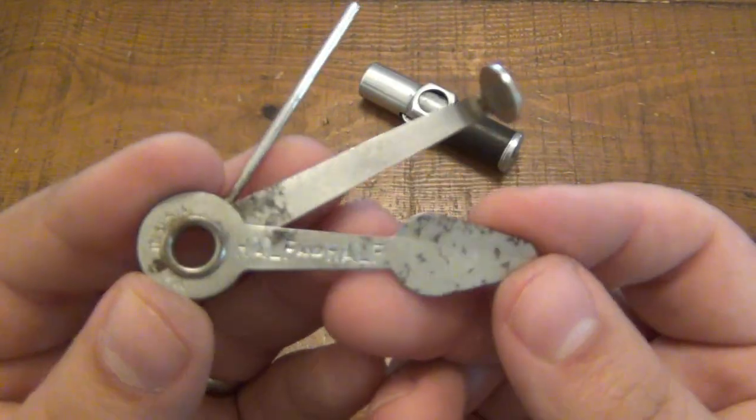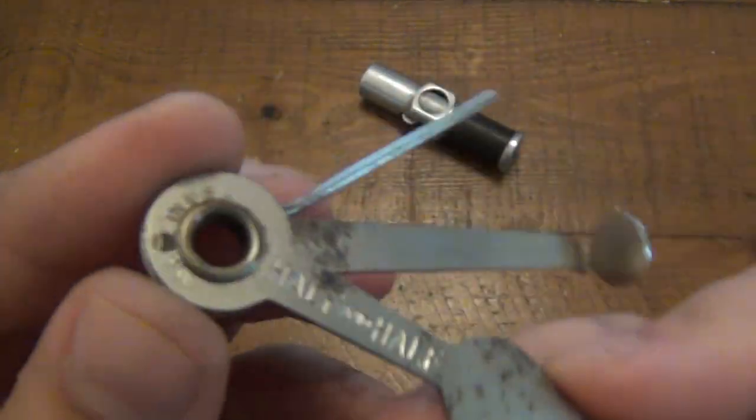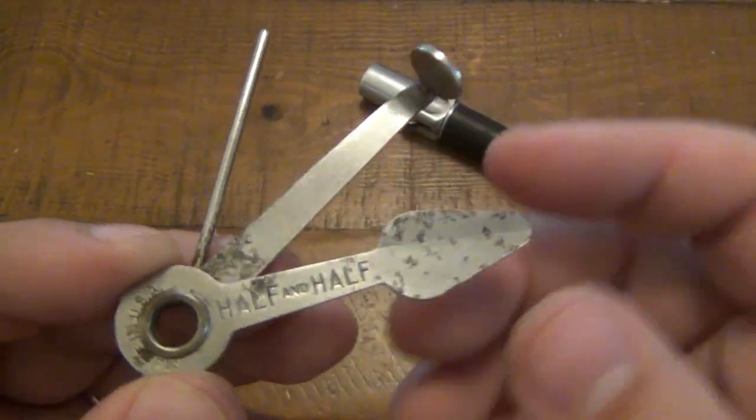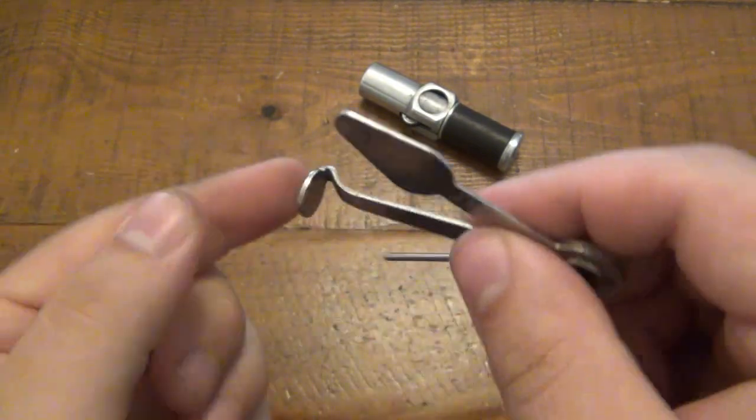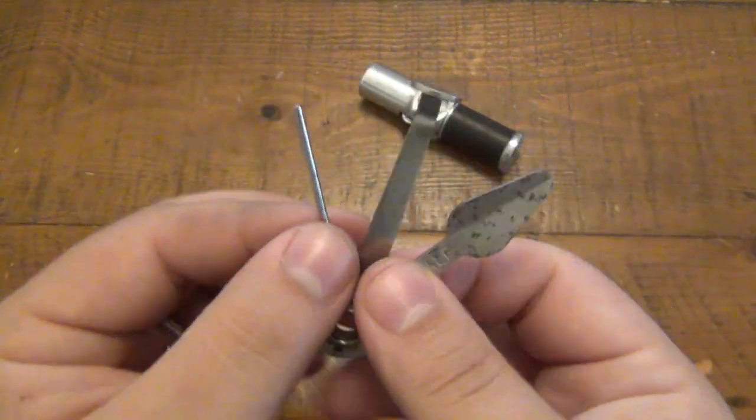Now as far as the pipe tool goes, it's a pretty standard pipe tool, but this one has the half and half advertising on there. Also says made in the USA over here by the pivot and this has the standard three pipe tools. We have a poker, we have our actual pipe tamper, this is what you're going to use to push down the tobacco in the pipe bowl, and then we have a reamer or scraper tool.